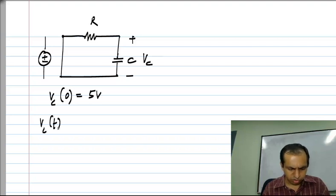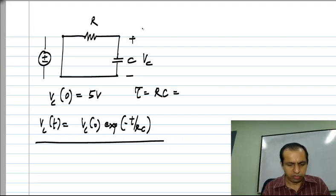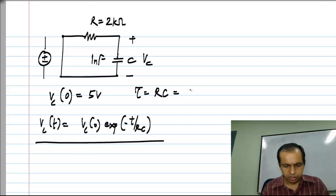And the time constant RC for this case is the product of R and C. Let us say R is two kilo ohms and C is one nano farad, then RC is two kilo ohms times one nano farad which is equal to two microseconds.